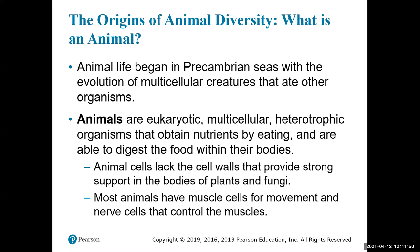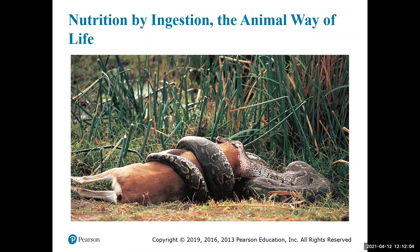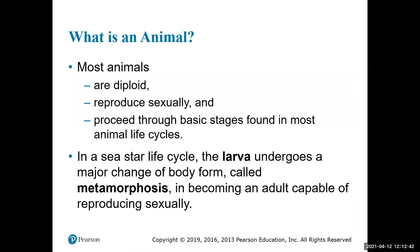Most animals also have muscle cells that allow them to move, and nerve cells that control those muscle cells — very different from plants. Here we can see an extreme example of heterotrophic interaction: a python consuming a large ungulate, demonstrating the kind of ingestion and food consumption that animals are capable of. This heterotrophic interaction is how animals generate energy from organic compounds.